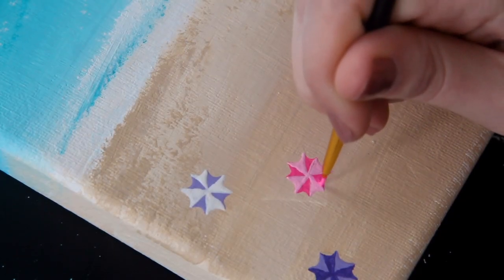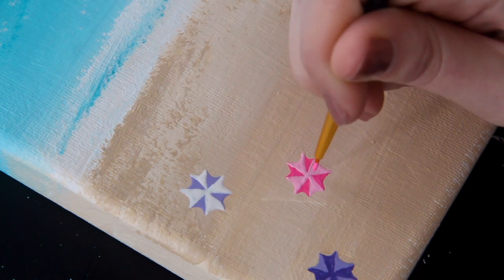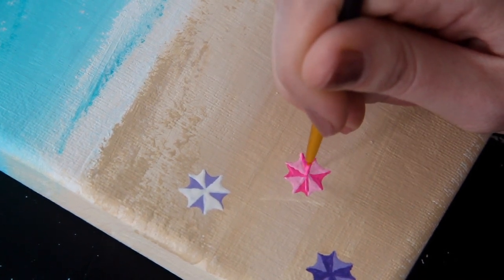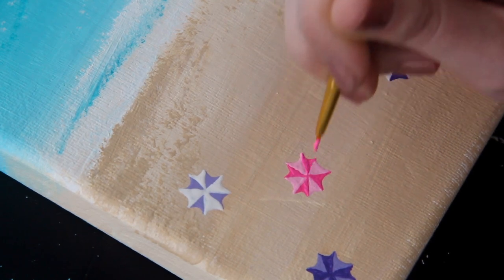So once again, let that dry. And then if you overshot it a little bit with the second color, you can go back in with the first color to touch up the edges.